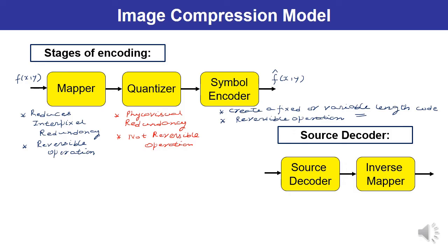Next is the source decoder, which consists of two main components: the symbol decoder and inverse mapper. It performs the reverse or inverse operation of the source encoder, symbol encoder, and mapper block. The inverse for the quantizer is left out. The input to the decoder is received from the channel, and after decoding and inverse mapping you will be able to extract the original information f(x,y). The stages of encoding and decoding process should now be clear.